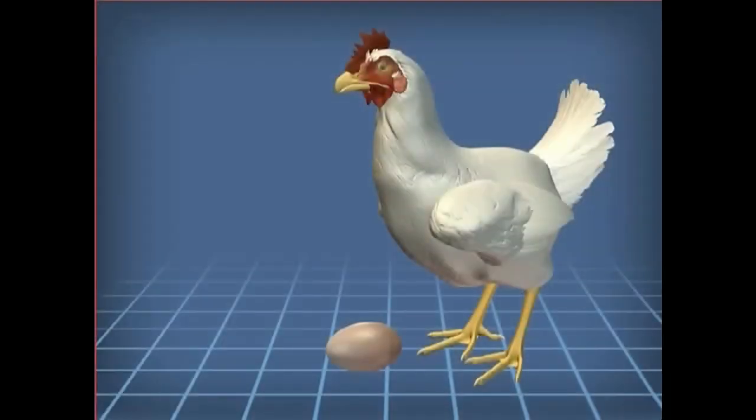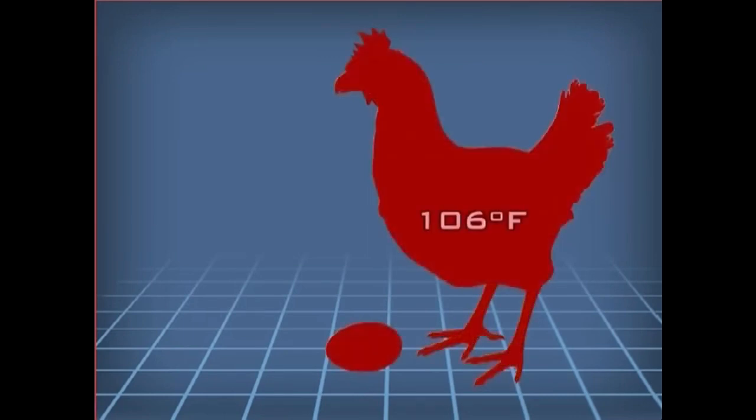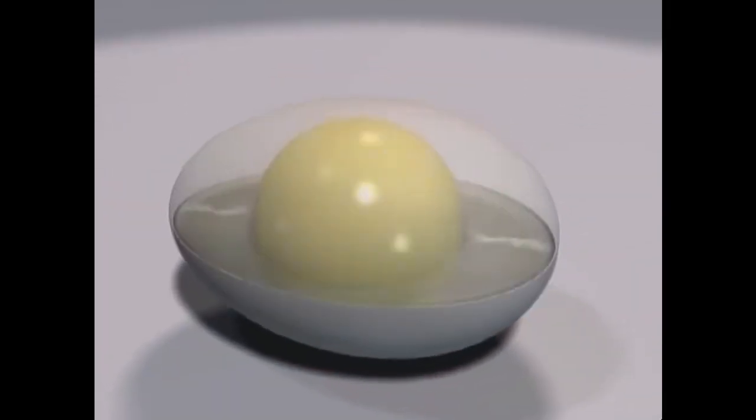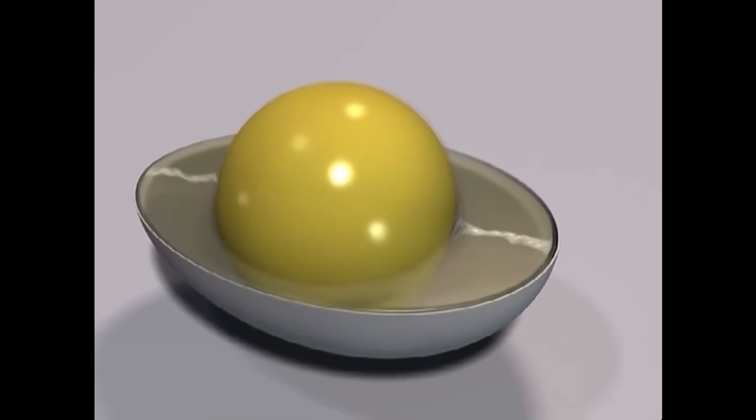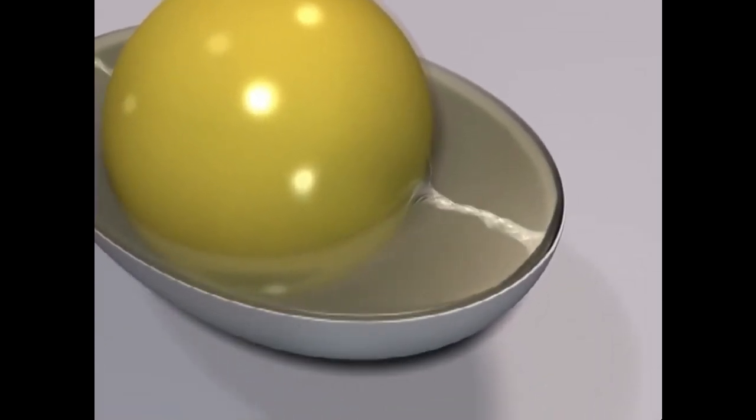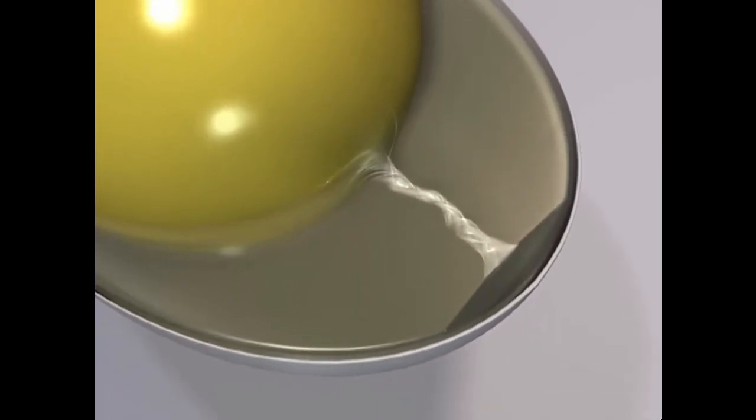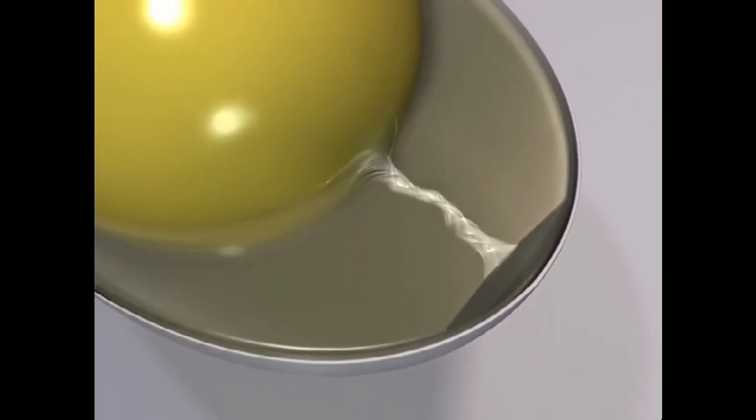An important part of the egg does not form until after it is laid. When an egg is laid, it fills the shell. However, a hen's body temperature is 106 degrees Fahrenheit, and eggs are generally laid into environments that are 20 to 40 degrees cooler. As the egg cools, the inner portion contracts and forms an air cell between the two shell membranes. A chick would puncture and breathe through the air in this cell before hatching.